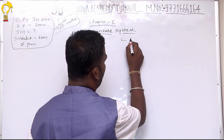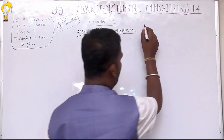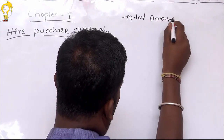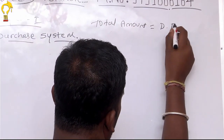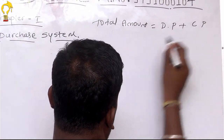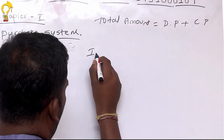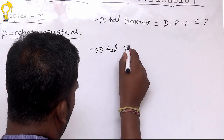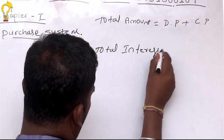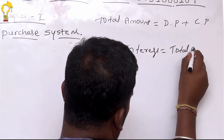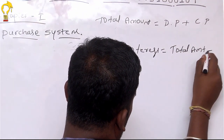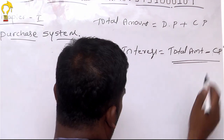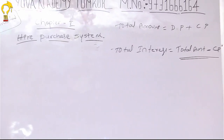Okay, cash pay first row. Now we add a step back and the total amount is equal to DP plus cash pay. In step 4, total interest is the total amount minus the cash pay in the middle of the month.